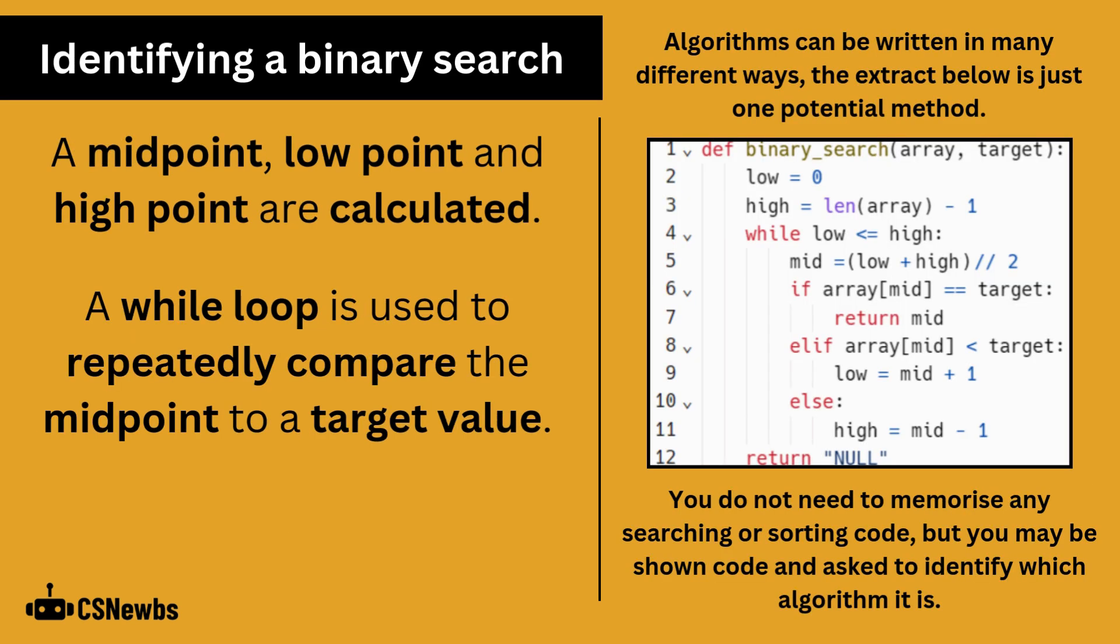In the OCR GCSE, you do not need to memorize any searching or sorting algorithm code, but you may be shown code and asked to identify which algorithm it is. The two main clues for identifying a binary search is that you should be able to spot a midpoint, low point and high point being calculated. Also, a while loop will be used to repeatedly compare the midpoint to a target value.